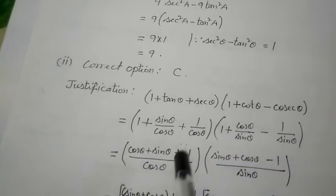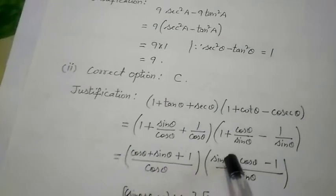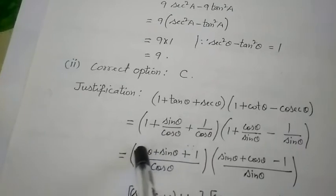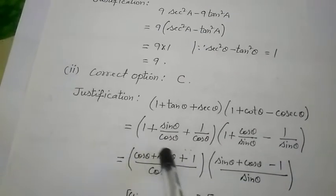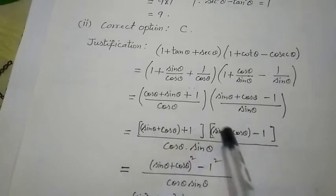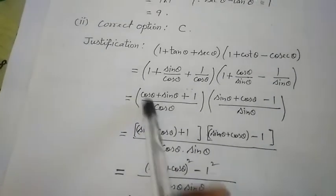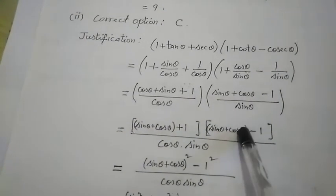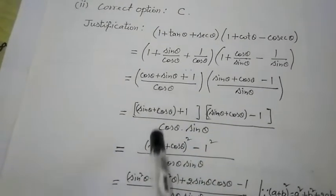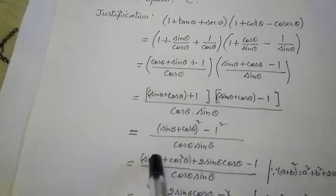If you are given (sin θ + cos θ), suppose sin plus cos equals some value 'a'. Our identity will appear — we talk about plus 1 and minus 1. Break it using the (a + b)(a − b) identity: (sin θ + cos θ)(sin θ − cos θ). So we have two signs: sin then cos. This is the a² − b² form, where a² = (sin θ + cos θ)² and b² = 1².